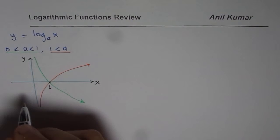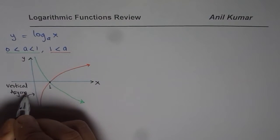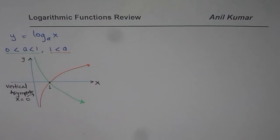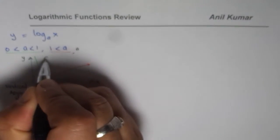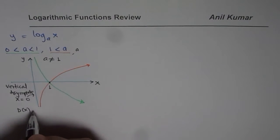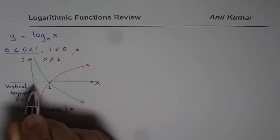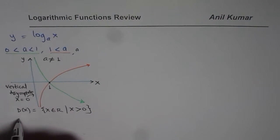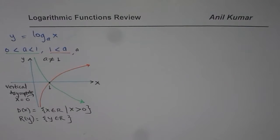There is a vertical asymptote at x equals 0. The domain of the function is x greater than 0 — x belongs to the real numbers but is always to the right of the origin. As for the range, y belongs to all real numbers with no restriction.